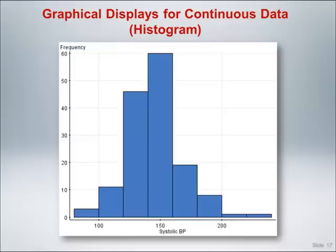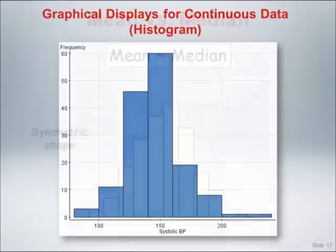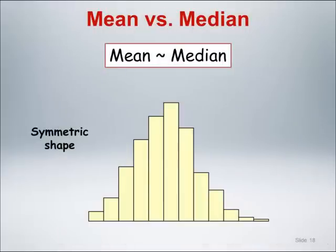Just by looking at a histogram, it is possible to determine the relative order of the mean and median of the variable in question. If the histogram has a balanced symmetric shape, this implies that the mean and median are approximately the same.